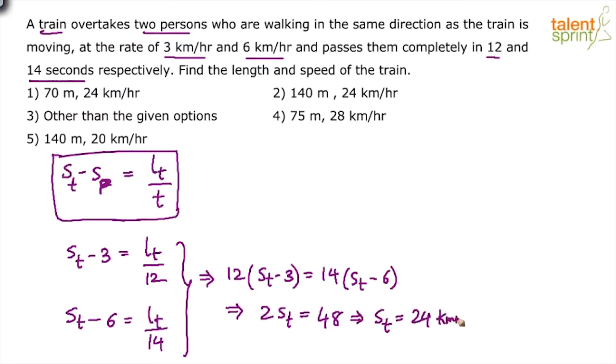So we get speed of the train as 24 km per hour. Look at the options. First of all, look at the options. Speed of the train is 24 km per hour. Option 1 possible. Option 2 is also possible. Option 3 is anywhere possible. Option 4 eliminated. Option 5 eliminated.